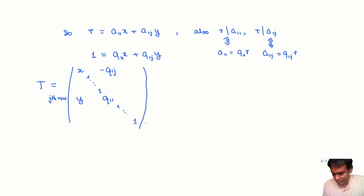And this is going to be an n by n matrix with entries in R. And everything else in this matrix is zero.